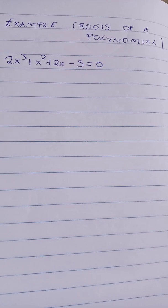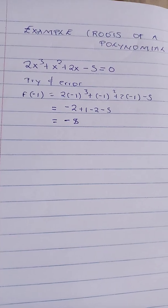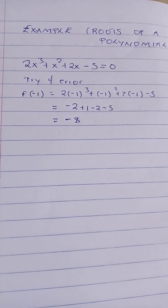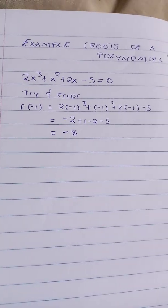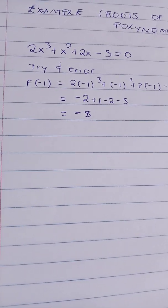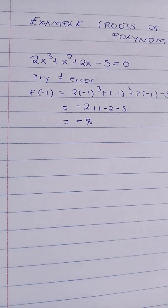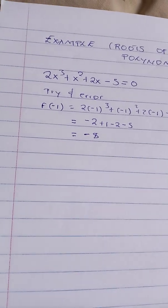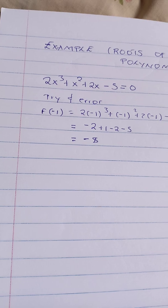Trying out negative 1, that is our tryout just as I guided in the previous video. It has given us negative 8, which is a clear indication that it is not a factor of that polynomial.